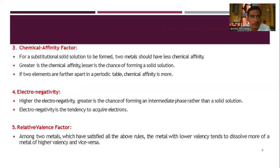The third factor is the chemical affinity factor: for a substitutional solid solution to be formed, the two metals should have low chemical affinity. Greater chemical affinity means a lesser chance of forming a solid solution. If the two elements are further apart in the periodic table, their chemical affinity is greater. The fourth factor is electronegativity: higher electronegativity means a greater chance of forming an intermediate phase rather than a solid solution. Electronegativity is the tendency to acquire electrons.